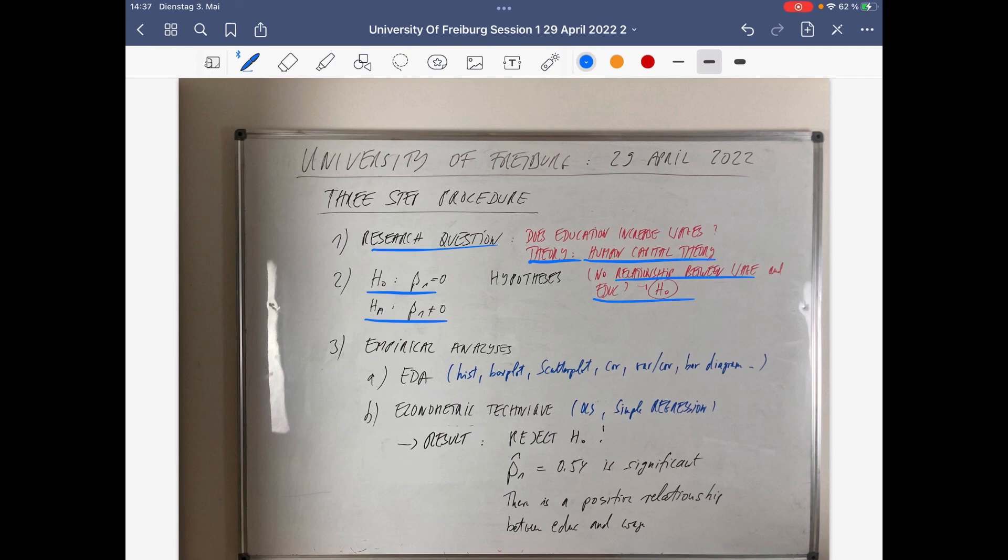So what we do in empirical analysis is first, explorative data analysis. So that's what I've shown: hist, boxplot, scatterplot, correlation coefficient, variance, covariance, metrics, bar diagram is necessary, and maybe also cor plot. I have a video on that also on my channel.